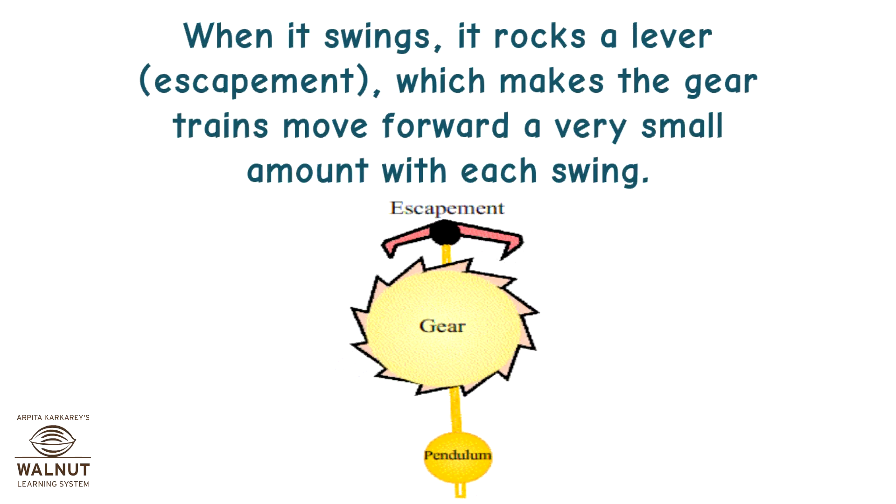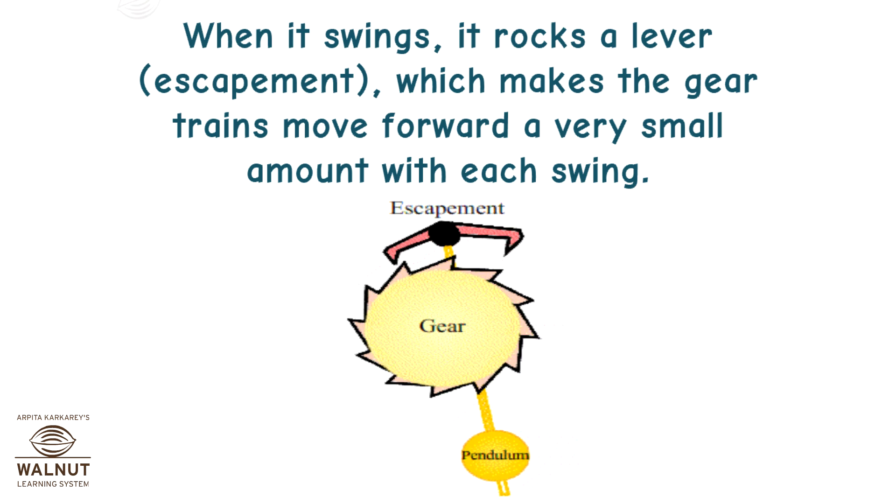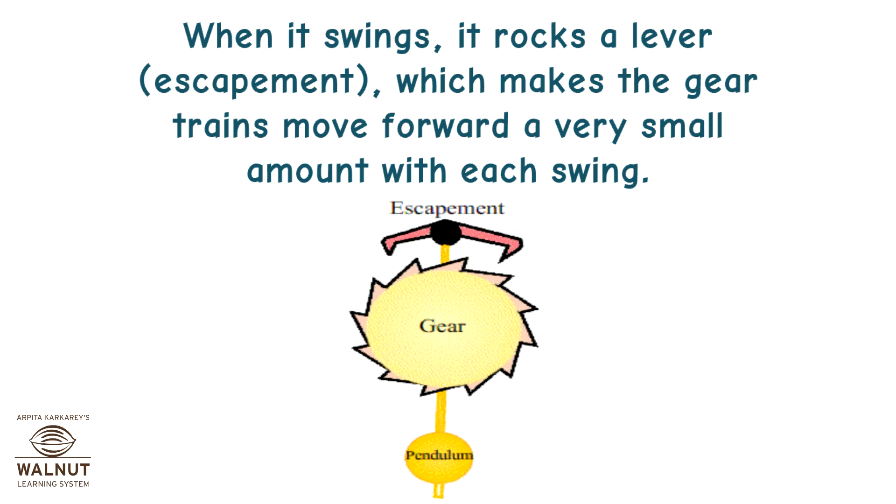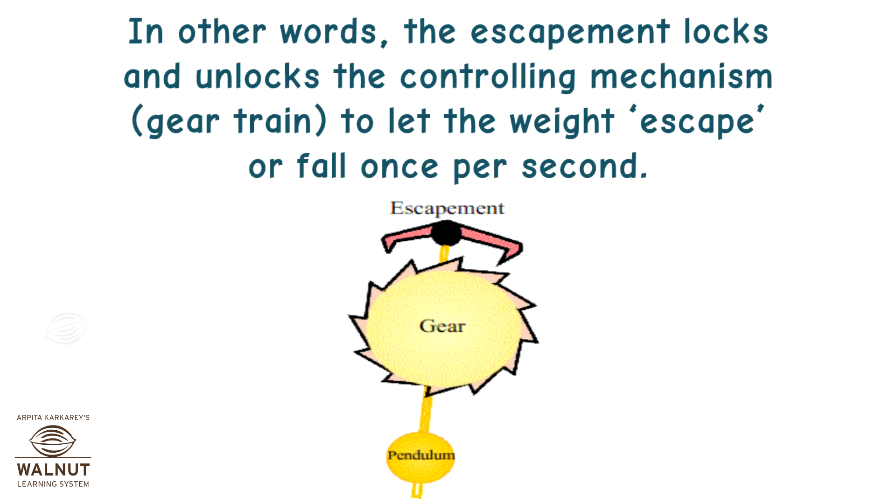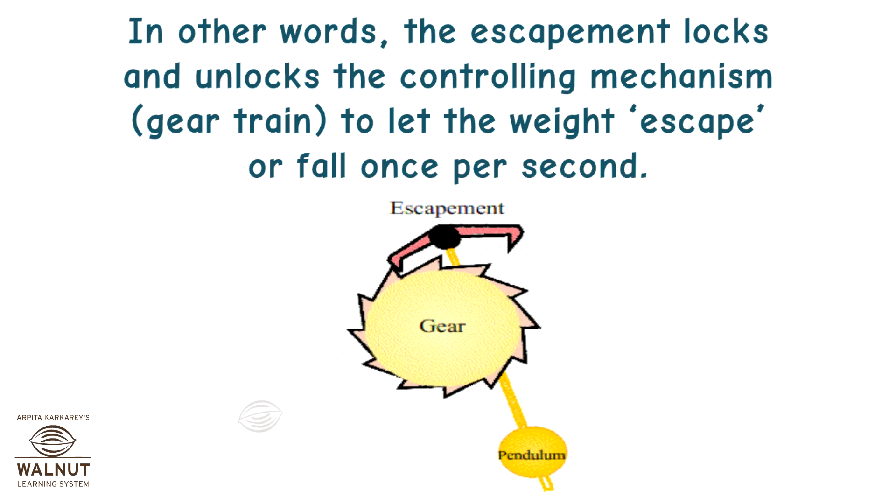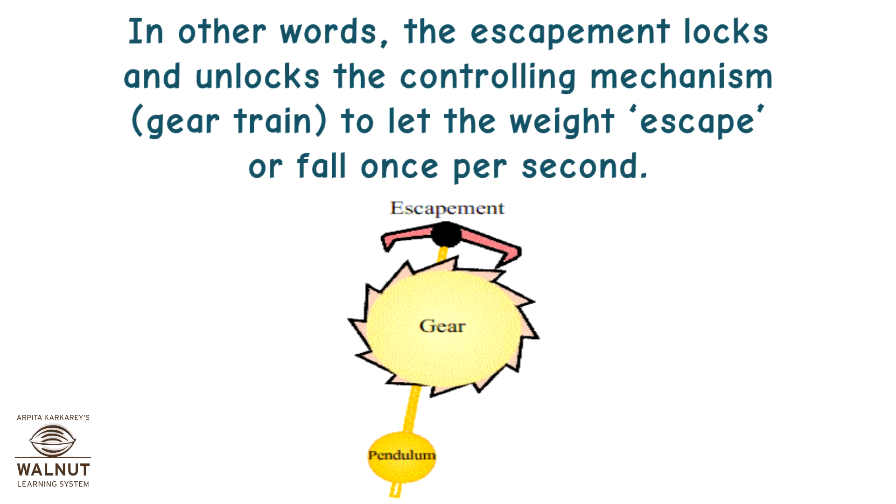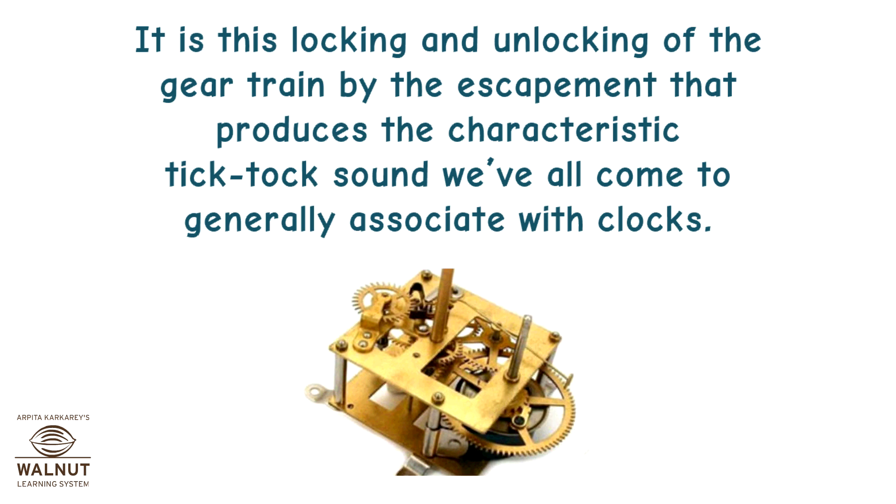When it swings, it rocks a lever, escapement, which makes the gear trains move forward a very small amount with each swing. In other words, the escapement locks and unlocks the controlling mechanism, gear train, to let the weight escape or fall once per second. It is this locking and unlocking of the gear train by the escapement that produces the characteristic tick-tock sound we've all come to generally associate with clocks.